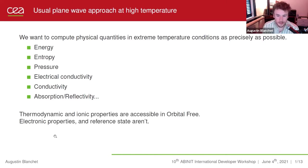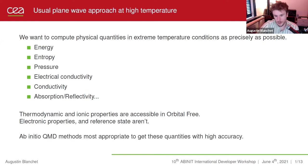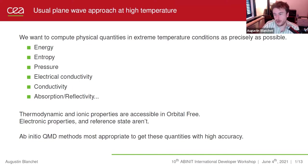The orbital-free codes that are normally used to perform such plasma simulations have access to the thermodynamic and ionic properties, but can't get directly to the electronic properties and also the reference states. So it is often required to use bootstrap methods to ensure continuity between models. Ab initio quantum molecular dynamics methods are still the most appropriate way to get these quantities as precisely as possible, because they are actually solving the many-body Schrödinger equation using all electrons, plane waves, or local basis sets, etc.